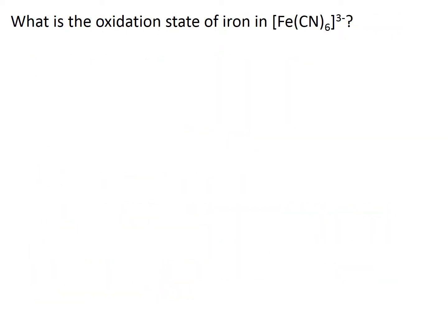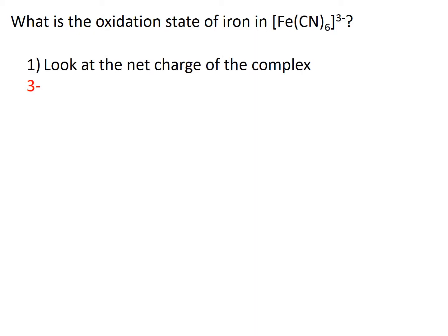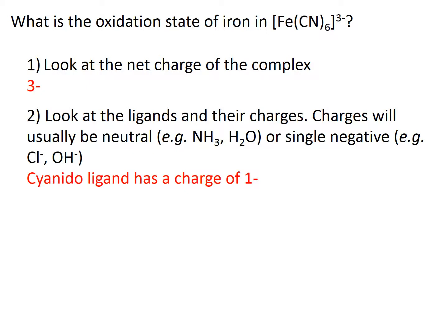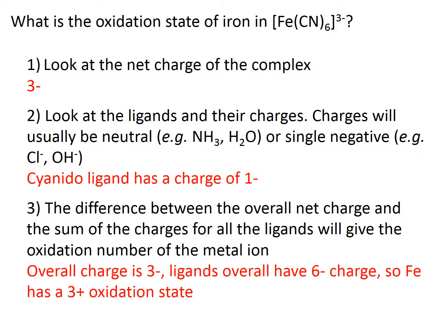Now we calculate the oxidation state of iron in this complex. First, the superscript symbol tells us that we have a net charge on the complex of 3-. Now we look at the ligands — we have cyanido ligands, which have a charge of 1-. Because we have 6 of these ligands, the overall ligand charge is 6-. So we take the overall charge of the complex, 3-, subtract the 6- charge on the ligands, and this tells us that iron has an oxidation state of 3+.